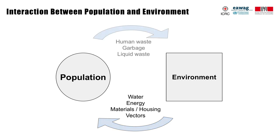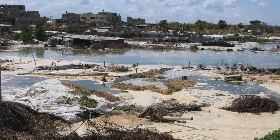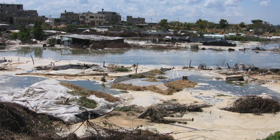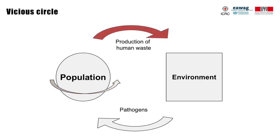On the other side are the wastes that a population discharges into the environment, in the form of human excreta, garbage, and liquid waste. Between these two poles, a vicious cycle may be created. Infectious diseases can be transmitted by direct contact within the population, but also through the environment. For example, if human wastes are disposed of inadequately, it can lead to a proliferation of pathogens in the water. As a result, it may lead to an increase of incidence of diarrheal diseases within the population, which itself leads to increased contamination of the environment, which leads to an increase of pathogens — a vicious cycle.